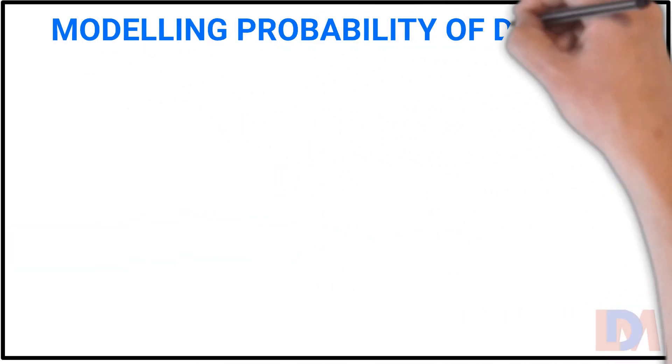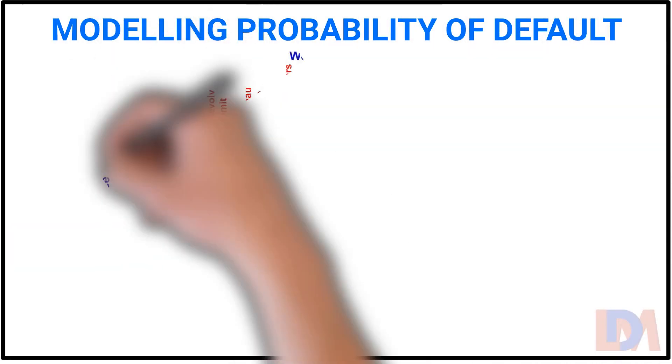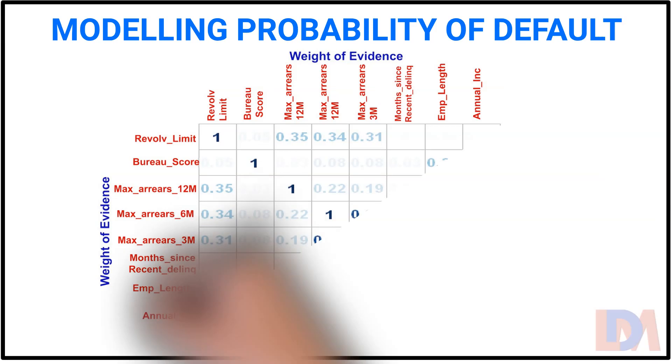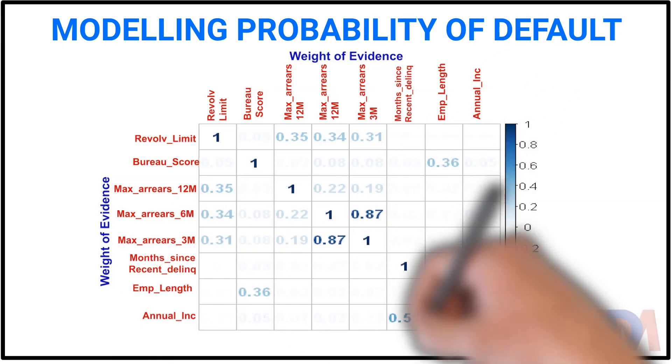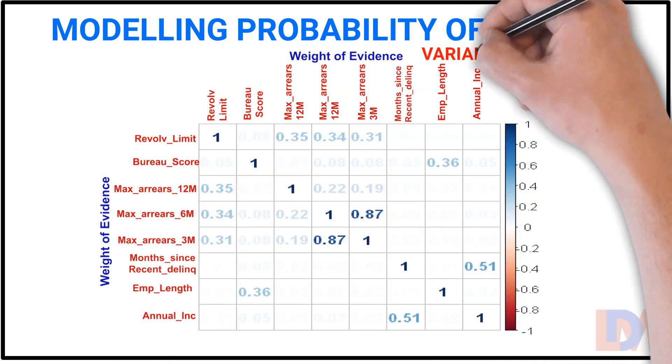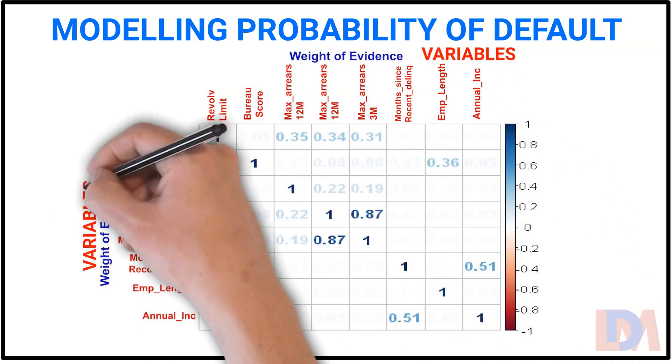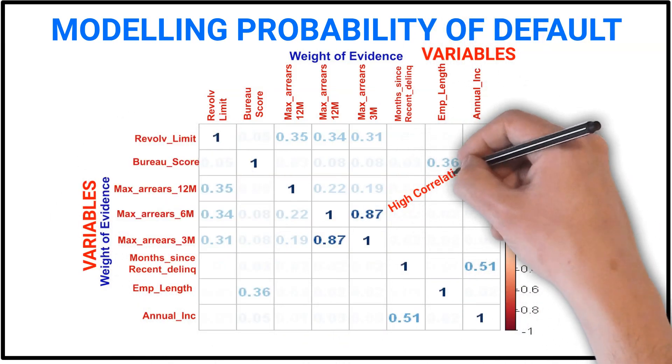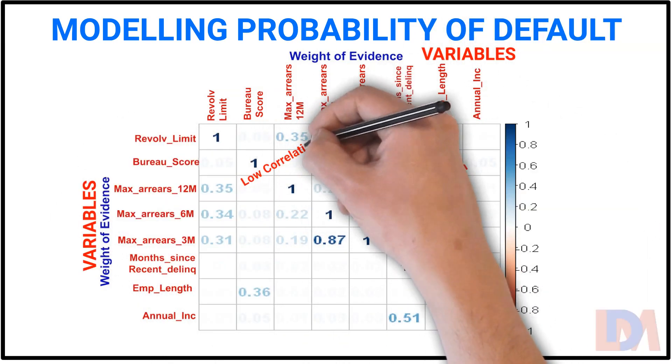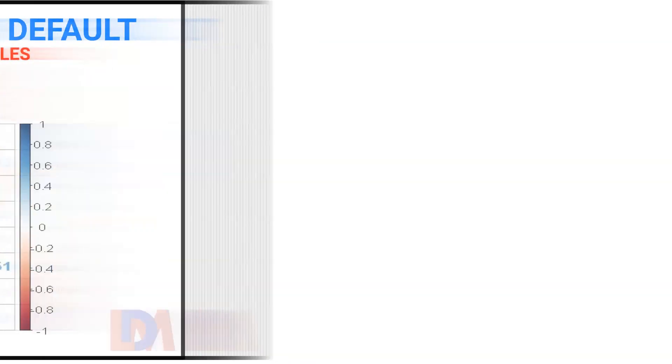Even as a subset of models to compute probability of default, one may compute correlation between different variables which impact probability of default.